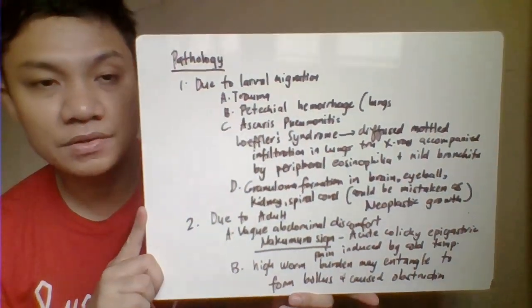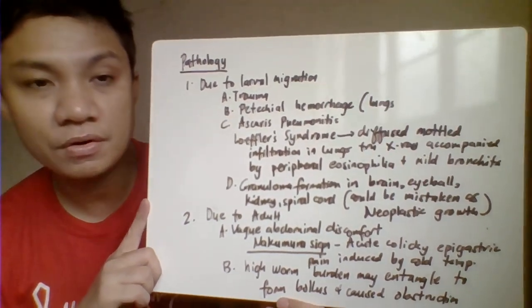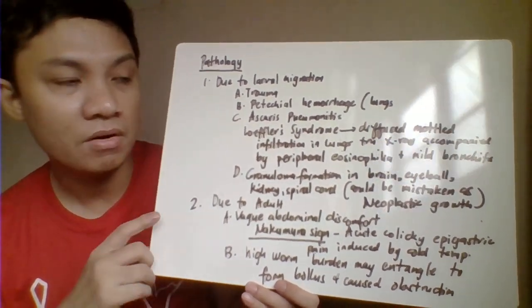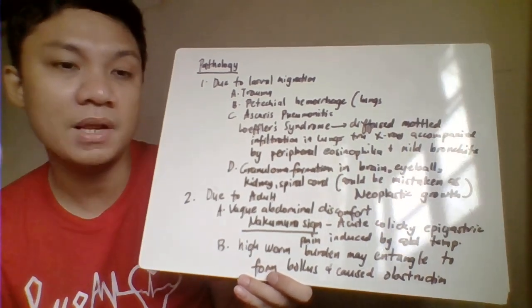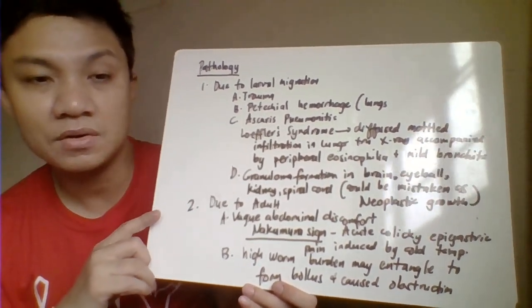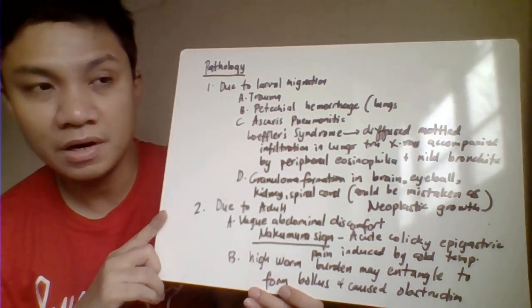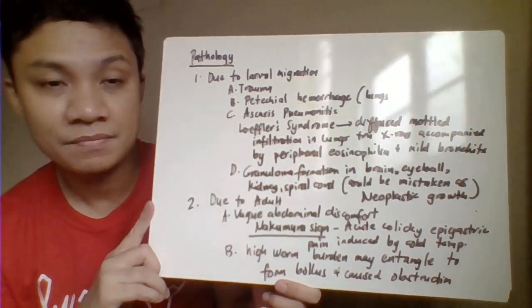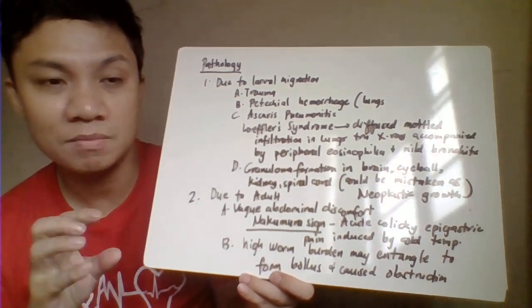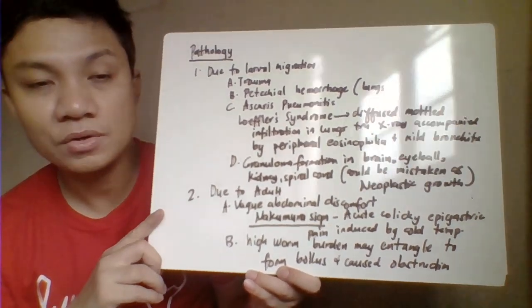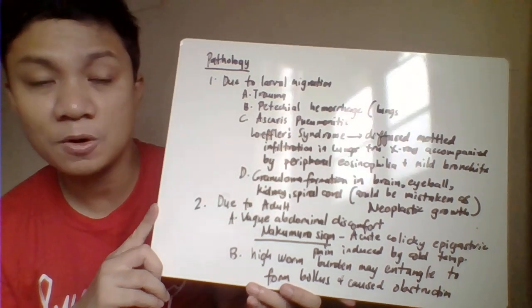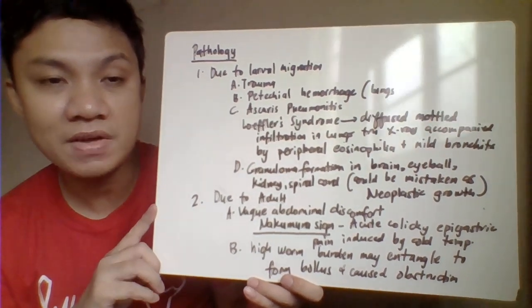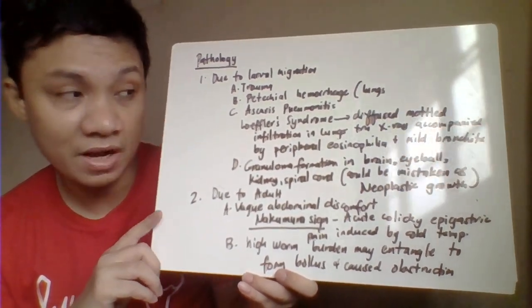For pathology of Ascaris infection, first we have larval migration. The larvae can migrate to other parts of your body and cause following trauma. It can cause hepatic hemorrhage, especially in your pulmonary lungs, causing Ascaris pneumonitis or Loeffler's syndrome. Loeffler syndrome can be manifested in x-ray, characterized by mottled infiltration - spots. This is associated with peripheral eosinophilia - increased WBC count and increased eosinophils, which is always associated with helminth infections, plus mild bronchitis manifestations.